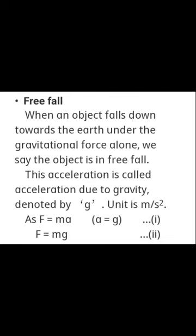Now a new topic: free fall. When an object falls down towards the earth under the gravitational force alone, we say the object is in free fall. This acceleration is known as acceleration due to gravity, denoted by small g. The SI unit of acceleration due to gravity is meter per second square and its numerical value is 9.8 m/s². One important question is to explain the relation between small g and capital G, that is, the relation between gravitational acceleration and the universal constant.